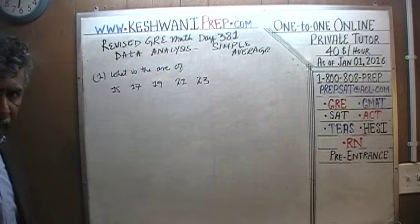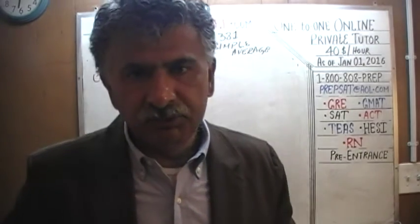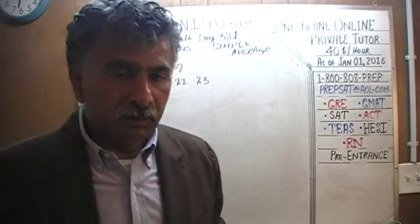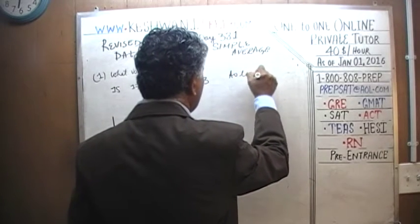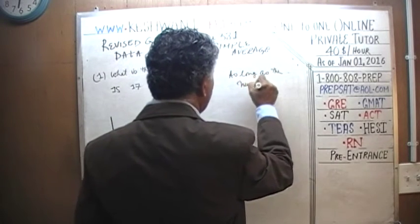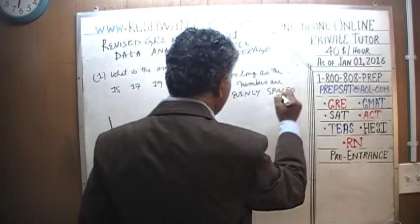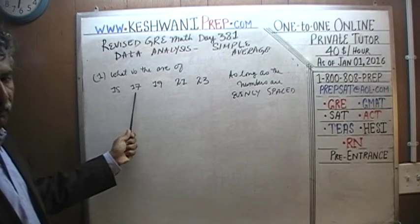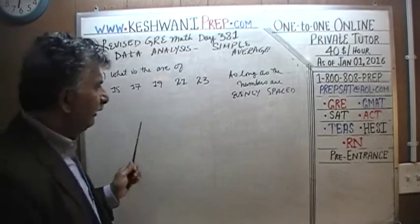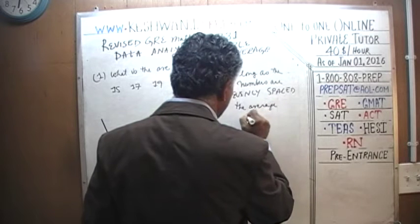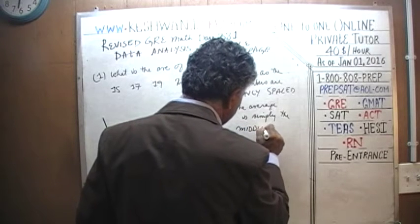The simple thing which is what everybody does is to add up 15 plus 17 plus 19 plus 21 plus 23 and divide by 5 — that's the traditional, orthodox, academic way. The quick way is to understand that as long as the numbers are evenly spaced — which they are here, going up by the same increment of 2 each time — as long as the numbers are evenly spaced, the average is simply the middle number.